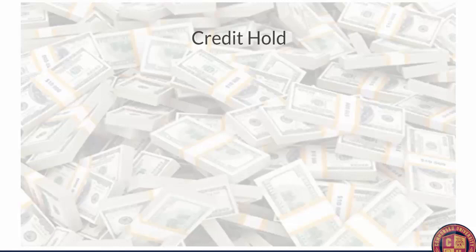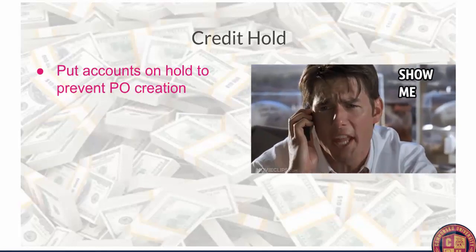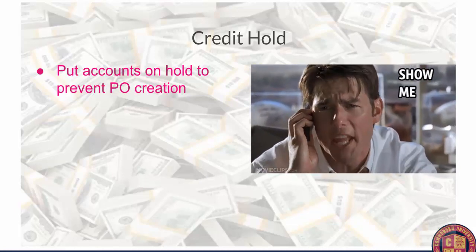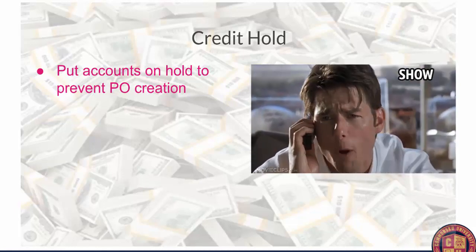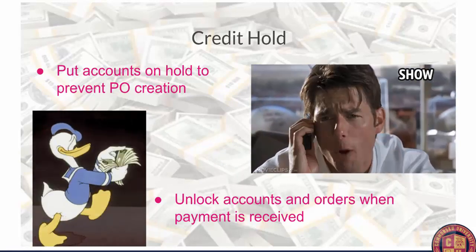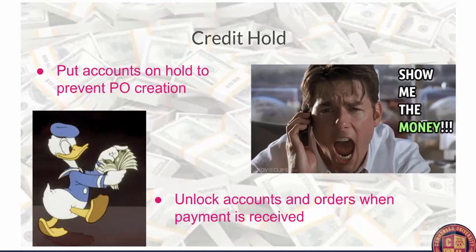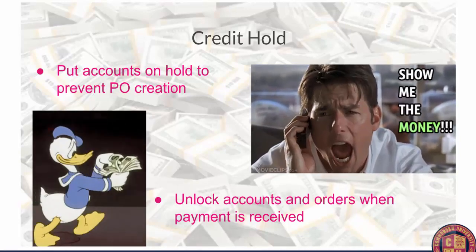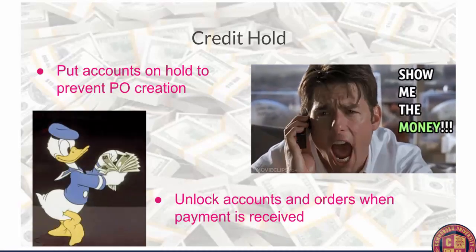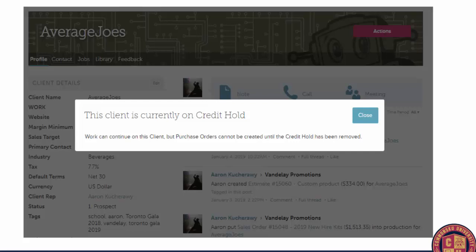Credit Hold is a feature request we got from a bunch of distributors. Sometimes a client is way behind on paying you and you want to prevent people from putting in more orders for that client. You now have the ability to put that client on a hold from inside the client profile, and it can also be unlocked when your payment is received. What this does is prevent any purchase orders from being created for that client's orders until the credit hold is removed. If you go to the client page, click the actions button and there will be an 'Apply Credit Hold' option. It will pop up a warning every time you open a project for that client or visit their client page.